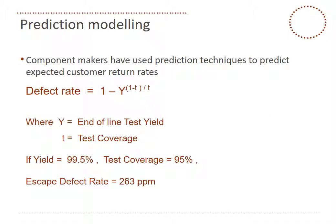Component makers and semiconductors have used prediction techniques for years to predict expected customer return rates. This is a common method where they use end-of-line test yield and T, test coverage, plug it in, and basically predict the escape level in PPM. That's generally done for an escape level arriving at the customer as infant mortality type problems. We are taking that a stage further — well beyond infant mortality into early life and out to the end of the initial 12-month warranty period.